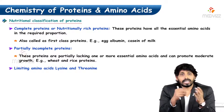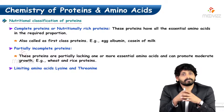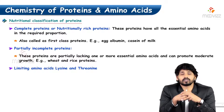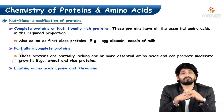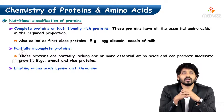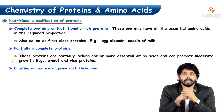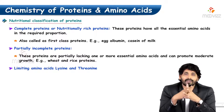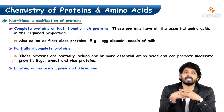Examples of complete protein are egg albumin and casein of milk. Try to have an egg every day, which supplies all the essential amino acids, and try to have at least a glass of milk every day.